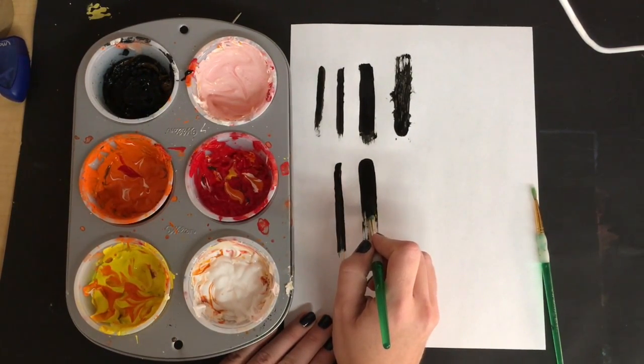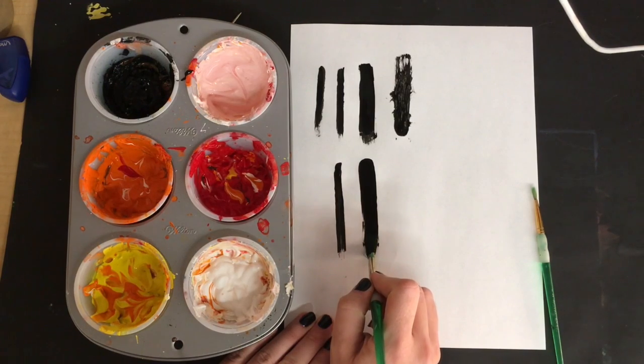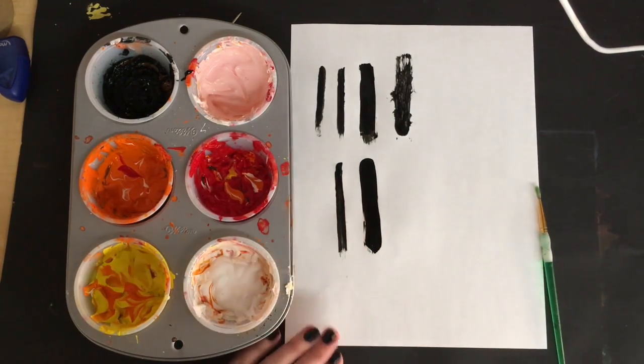Sometimes the paint runs out before my line is done and I might need to go back and retrace it to smooth it out.